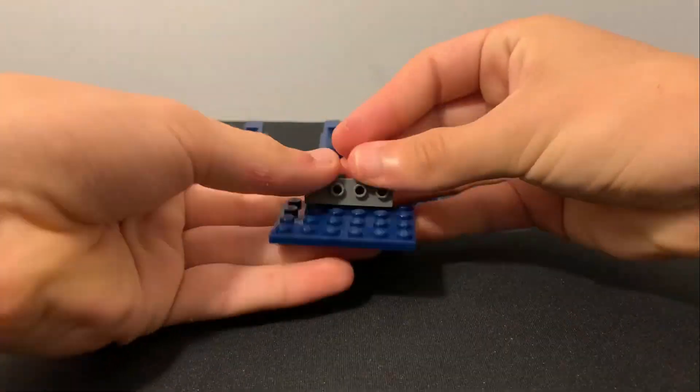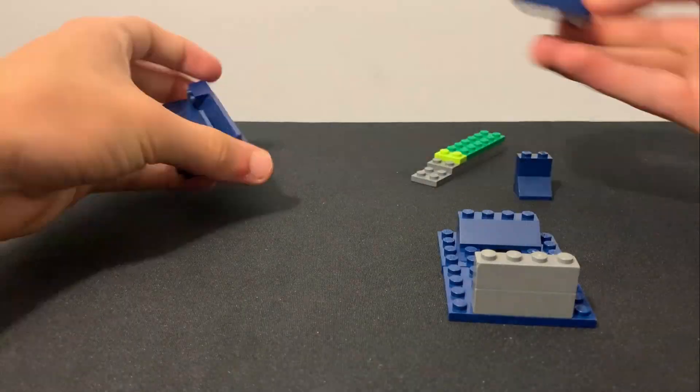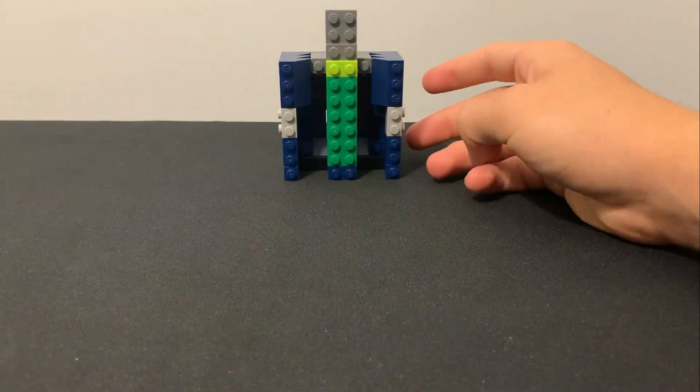After I finished the sides of the body, I built a connector piece for the head to fit on. Here I'm just finishing up the rest of the body, putting everything in place. As you can see, I put that connector in there just so the head can fit on properly.